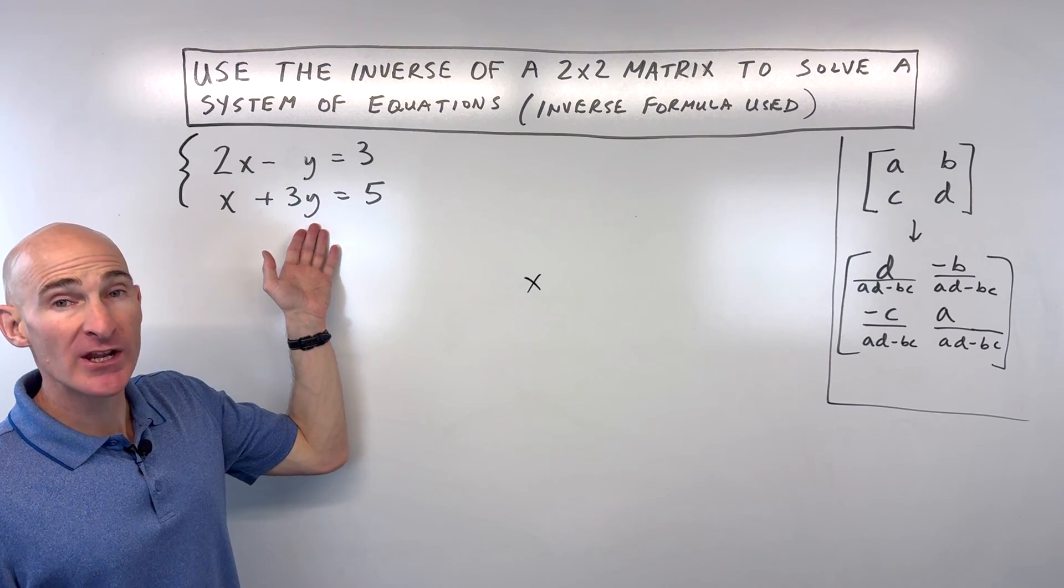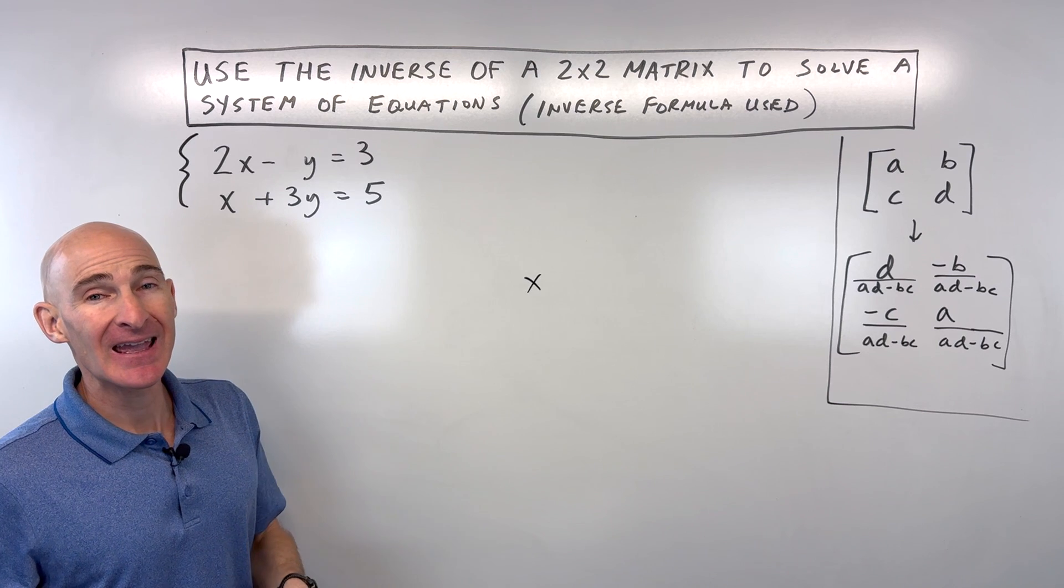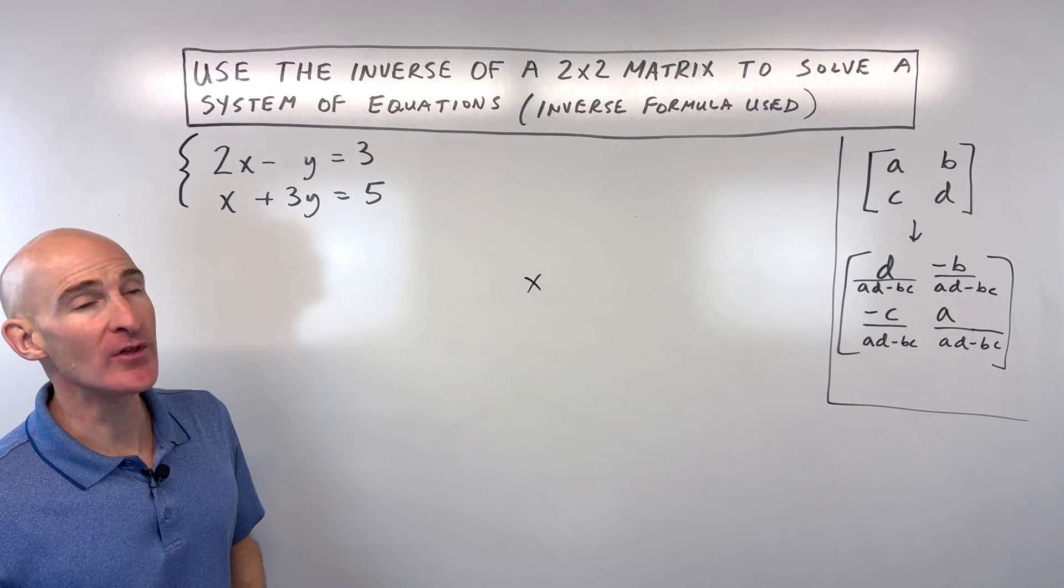So we're given this system of equations. We've got two variables, two equations, and we want to solve it using an inverse matrix. So how do we do that?